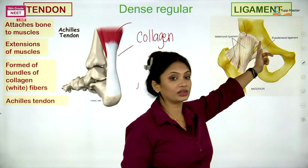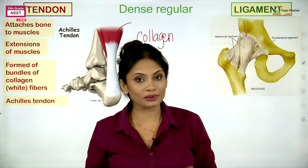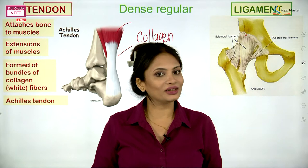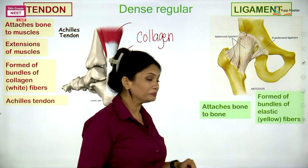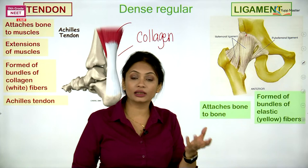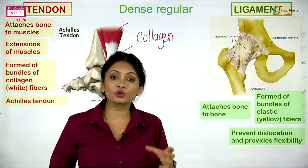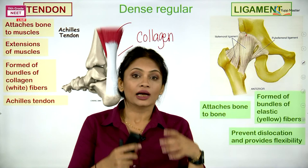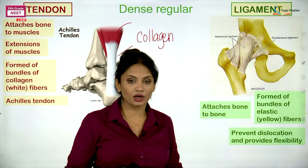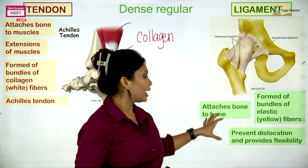The ligament must provide a certain amount of flexibility. If we want flexibility, we need yellow fibres. These ligament structures attach bone to bone and are formed of bundles of elastic fibres — the yellow fibres. Their function is to keep those bones in place, keep the joint intact, prevent dislocation, and provide flexibility at that region.